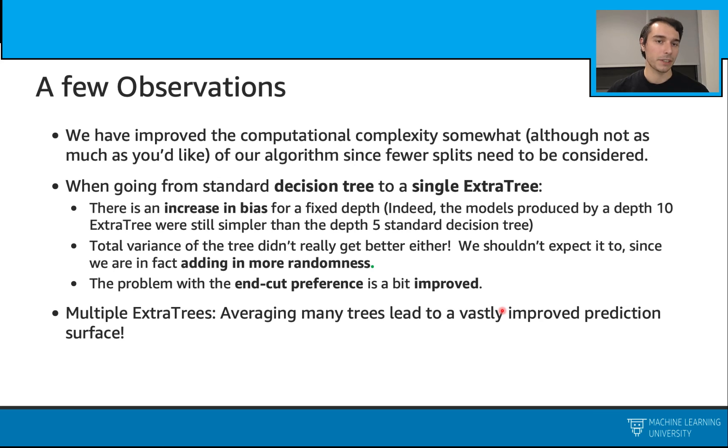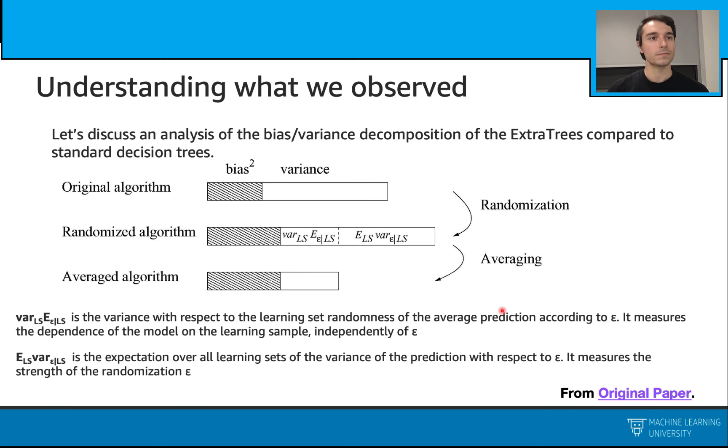Let's discuss the bias-variance tradeoff. We have this nice figure from this paper. In this discussion, we will have an original algorithm, a randomized algorithm, and an average algorithm. Here, let's assume the original algorithm is our decision tree, and let's assume we have this bias and variance.